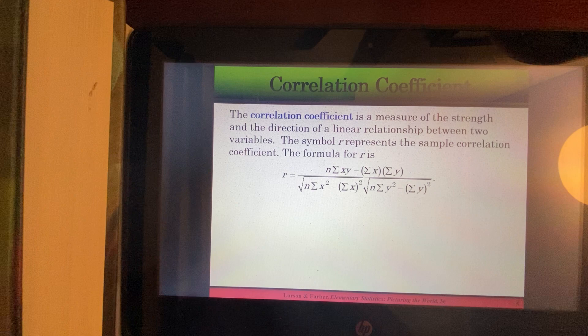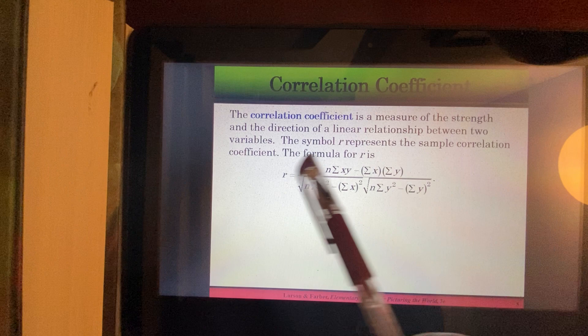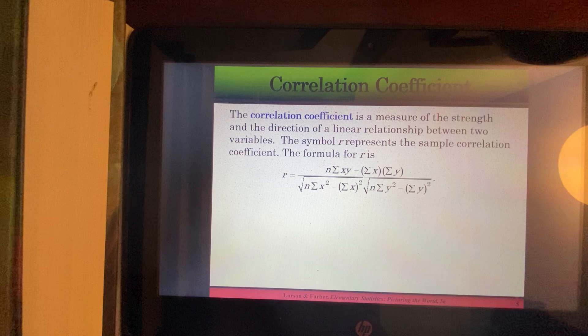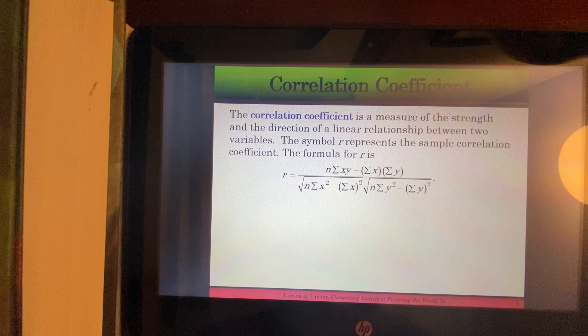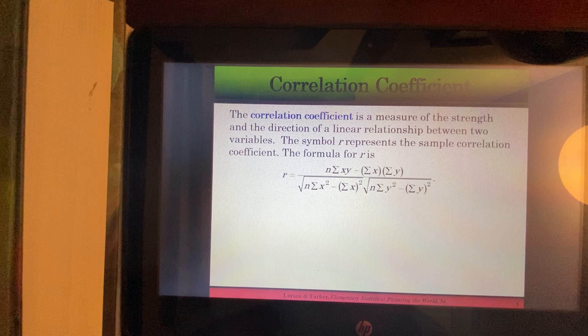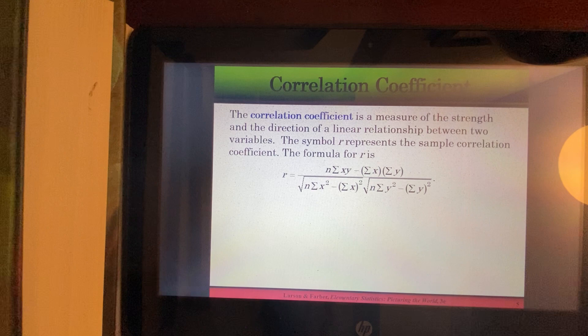All right, so now it's time to talk about your correlation coefficient. And this formula here just popped up, but don't let it scare you, because I'm going to bring you to a website that will let you easily calculate your correlation coefficient. So your correlation coefficient is a measure of the strength and the direction of a linear relationship between two variables. The symbol R represents the sample correlation coefficient. Okay, so yes, we do have this formula here, but I'm going to bring you to a website which will let you calculate R.